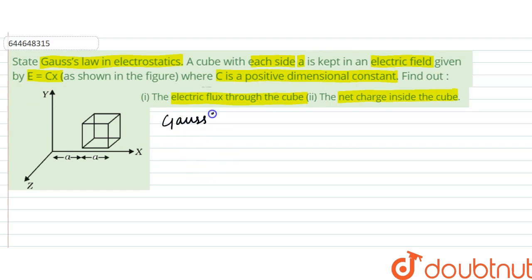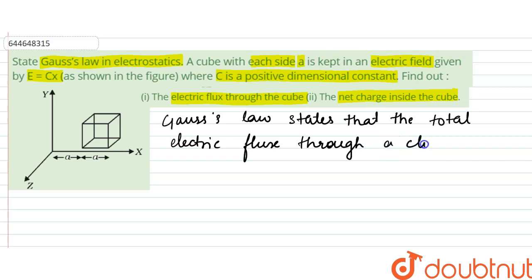So what does Gauss's law state? Gauss's law in electrostatics states that the total electric flux through a closed surface enclosing charge is equal to Q by epsilon naught, where Q is the enclosed charge.